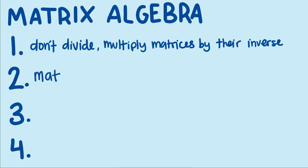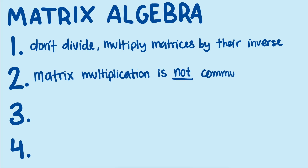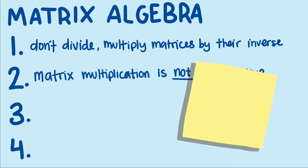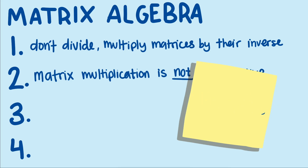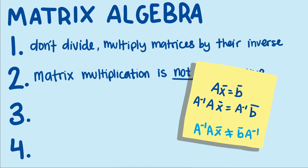Second, matrix multiplication is not commutative. If we switch the order of the factors in a matrix product we are not guaranteed to have the same product. That means we can't move matrices around like in the expression ABA⁻¹ to get A and A⁻¹ together to multiply to get the identity matrix. It also means that when solving we have to be careful to multiply the matrix on the same side of the expressions on both sides of the equation. For example, in solving Ax = b, we can write A⁻¹ on the left of both sides, but not swap to the right side — we're not even sure the product would be defined, let alone equal.